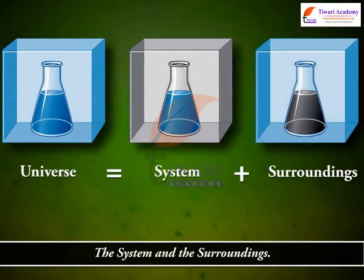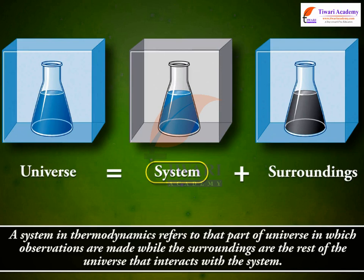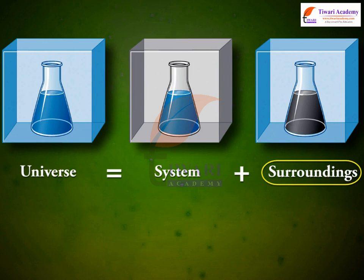The system and the surroundings. A system in thermodynamics refers to that part of the universe in which observations are made, while the surroundings are the rest of the universe that interacts with the system. The universe is equal to the system plus the surroundings.